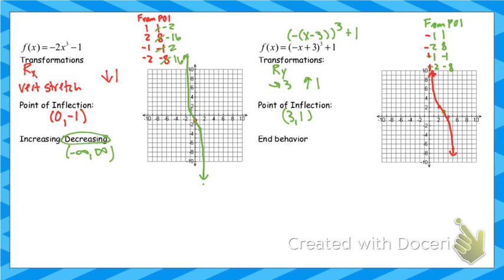You'll notice the shape looks similar to a reflection over the x — that's because of the special property that the cubic parent function is odd. For end behavior: as x approaches negative infinity, y is getting bigger; as x approaches positive infinity, y is getting smaller.